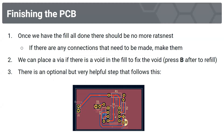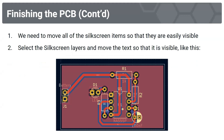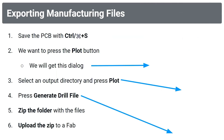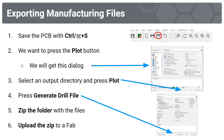Move all silkscreen items so they're easily visible by selecting the silkscreen layers and moving the text. Once you've double-checked everything, we're going to export manufacturing files. Save the PCB with Ctrl+S, then press the Plot button — not the printer button, but the slightly different plot icon. In the dialog, select the output directory and press Plot. Then press Generate Drill File. Zip the folder with the files and upload the zip to JLCFAB.